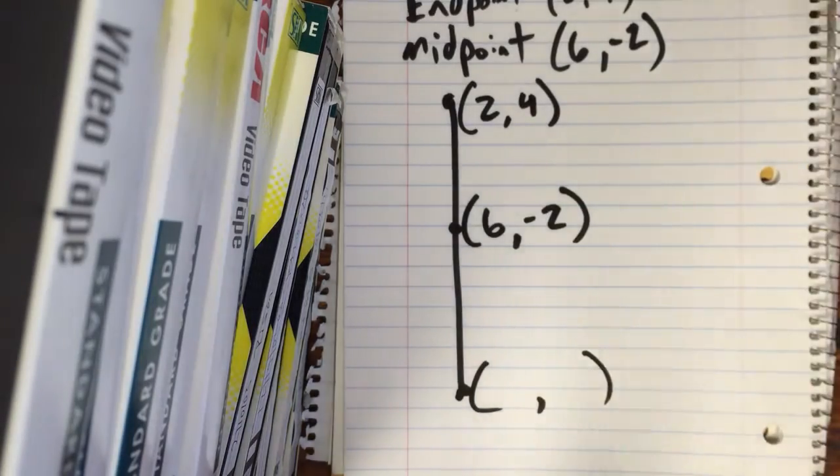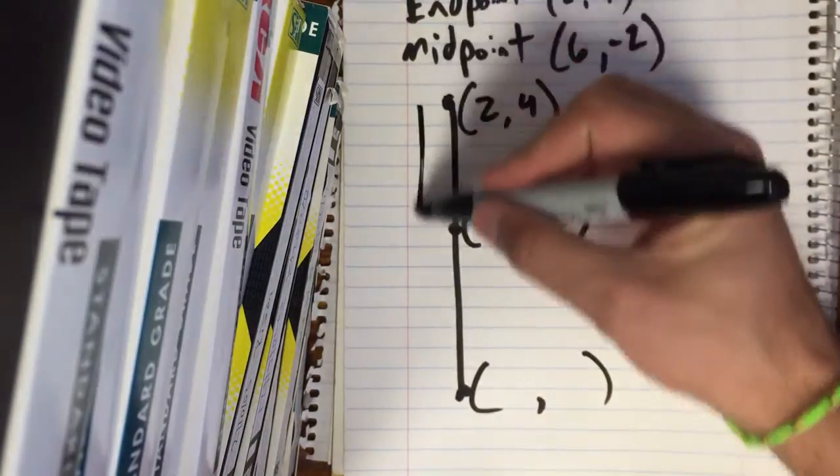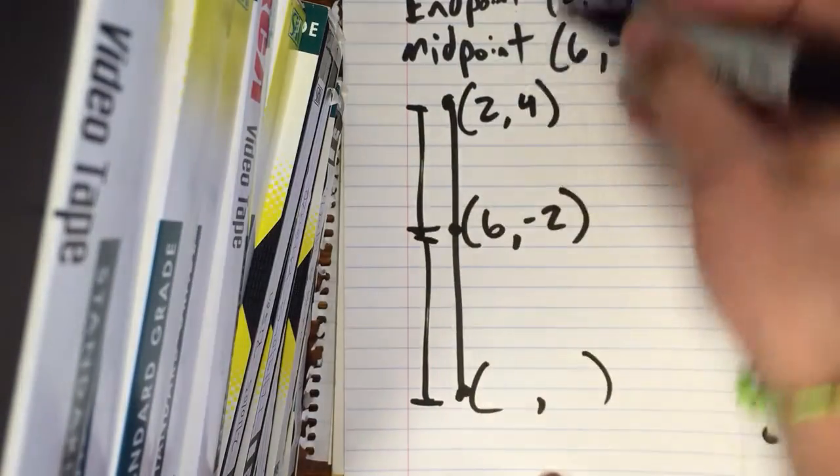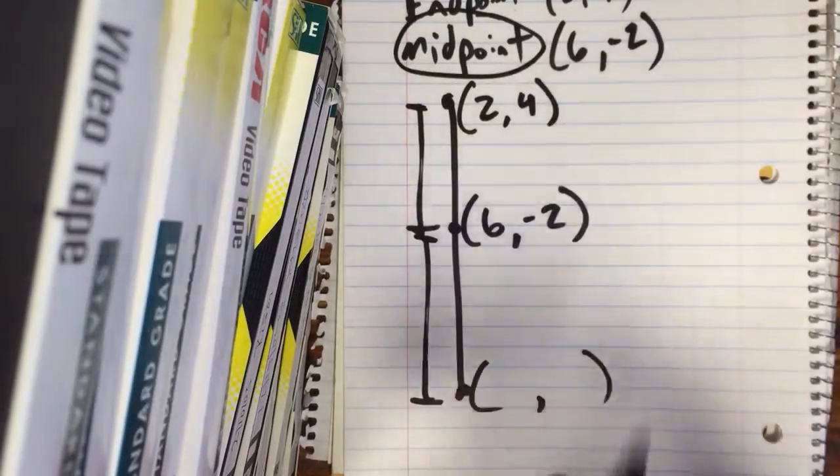Well, we're trying to find the other endpoint. So whenever we do that, we can look at—we know in this equation, here to here is gonna be the exact same as here to here because that's what a midpoint does. It's in the middle of that line.